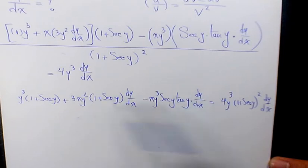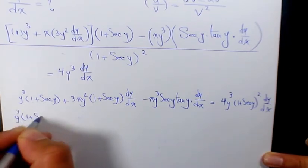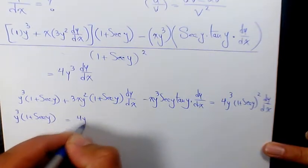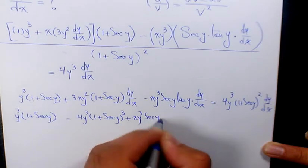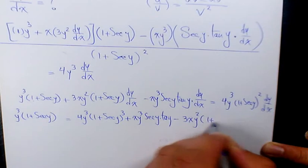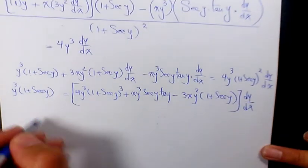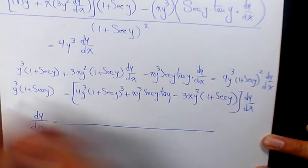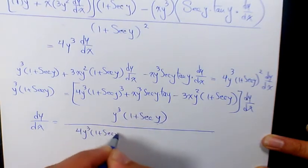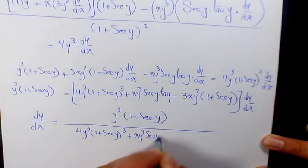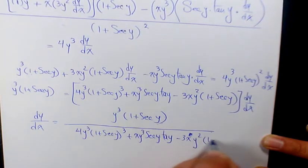Now I need to move the dy over dx terms to the right hand side and keep the remaining term on the left. So it's going to be y to the power of 3 times 1 plus secant y, equals 4y cubed times 1 plus secant y squared plus xy cubed secant y tan y minus 3xy squared times 1 plus secant y, all times dy over dx. So dy over dx equals y cubed times 1 plus secant y, divided by 4y cubed times 1 plus secant y squared plus xy cubed secant y tan y minus 3xy squared times 1 plus secant y.